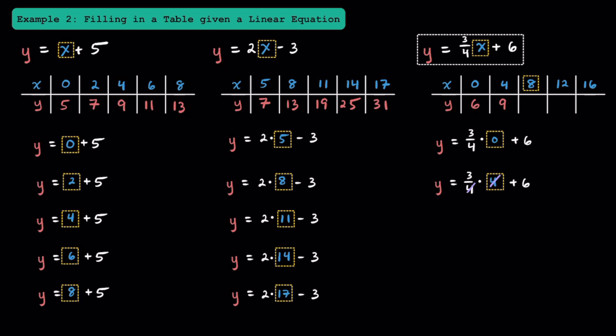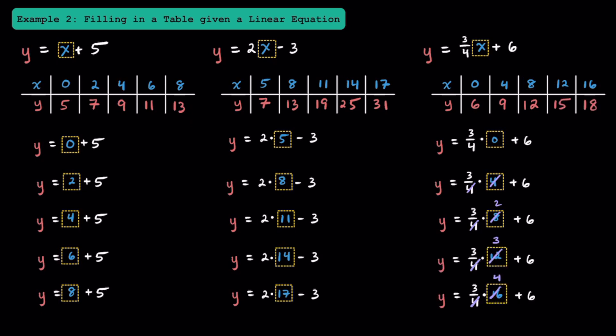Now let's do this when x equals 8. Subbing in 8, we have y is equal to three-fourths times 8 plus 6. When multiplying three-fourths times 8, the 4 and 8 cross-cancel to make 1 and 2, and 3 times 2 equals 6, and 6 plus 6 equals 12. At this point, give the video a pause and see if you can do the last two. Given a linear equation and some x values, you can substitute the values in for x and solve for y — this is the process you'll use to fill in tables for linear equations.